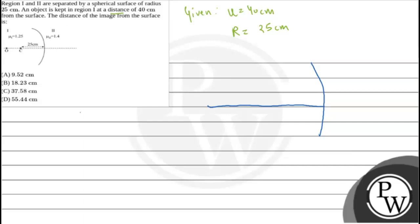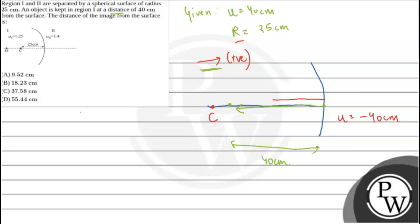This is the spherical surface in the given question, and this is the principal axis. Whatever light comes in this direction, we consider it positive. The object is kept at a distance of 40 cm from the surface. Since u is going against this direction, u will be minus 40 cm.